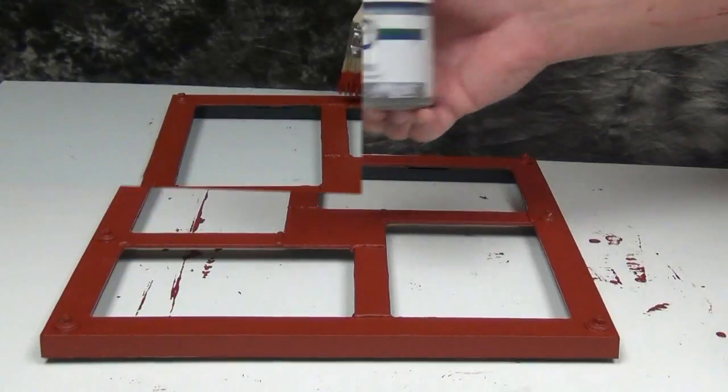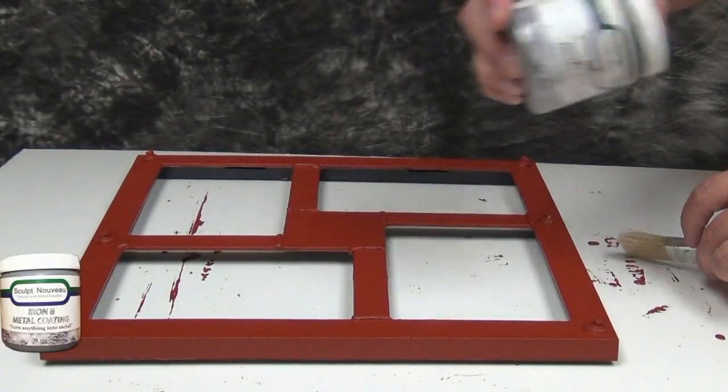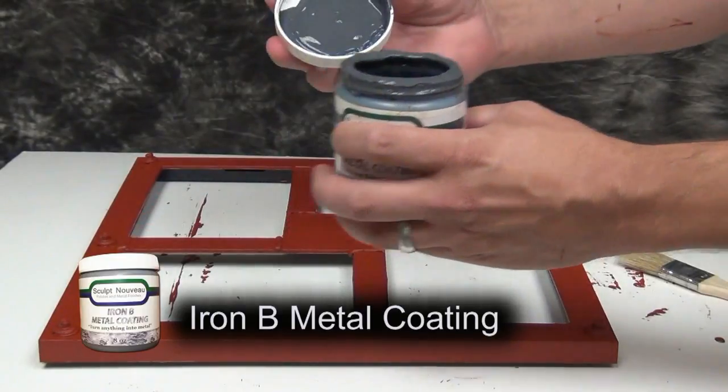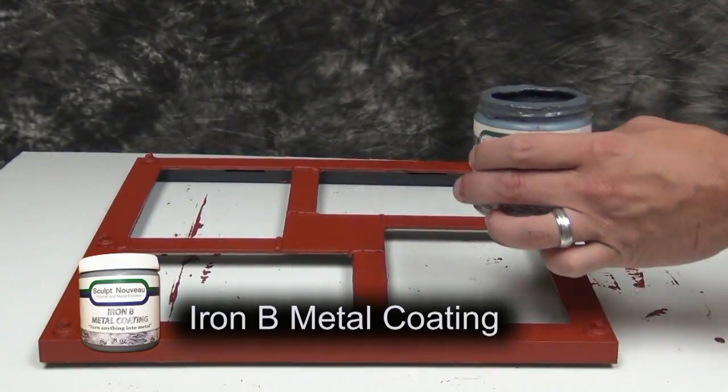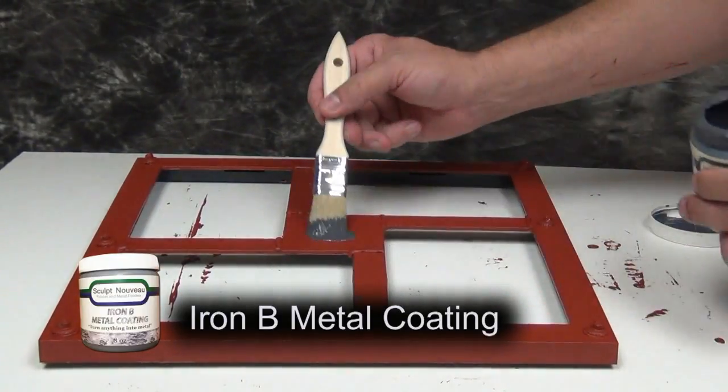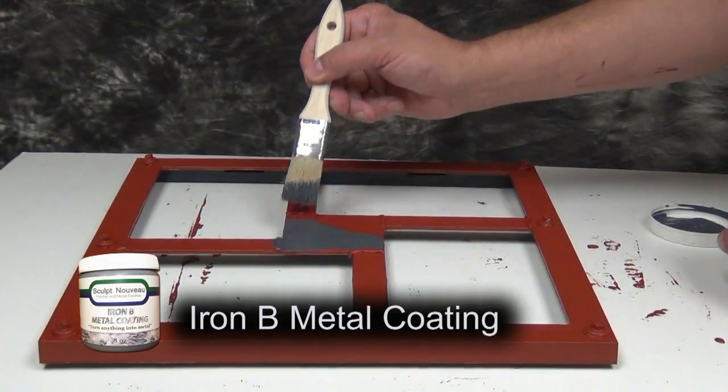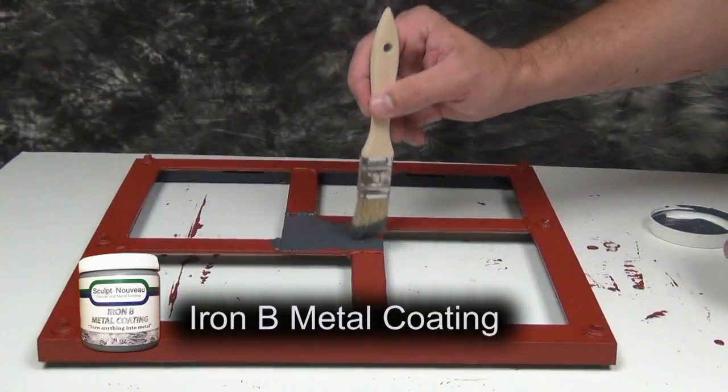Once the Primit has dried, you're ready to apply your Iron B metal coating. Make sure you shake that up really good before use because it does contain real iron particles that need to be properly suspended before application. When you paint this on, you want to apply a uniform coating all over the surface for the first coat.